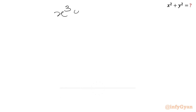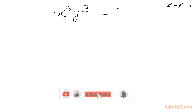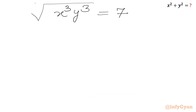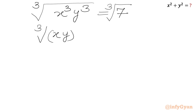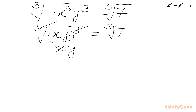So I can write x³y³ = 7. Now for real x and y values, I will take the cube root of both sides. So cube root of (xy)³ equals cube root of 7. The cube root and cube cancel from the left-hand side, giving us xy = ∛7.